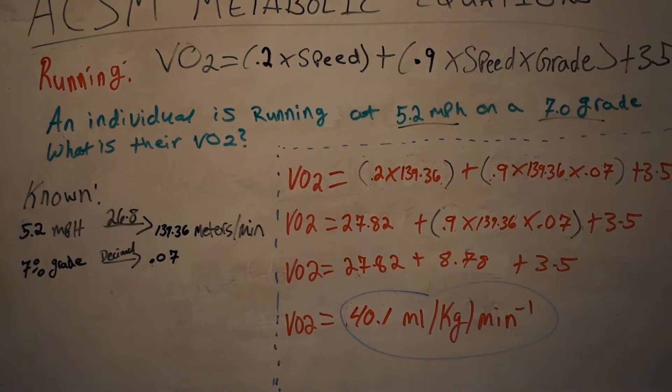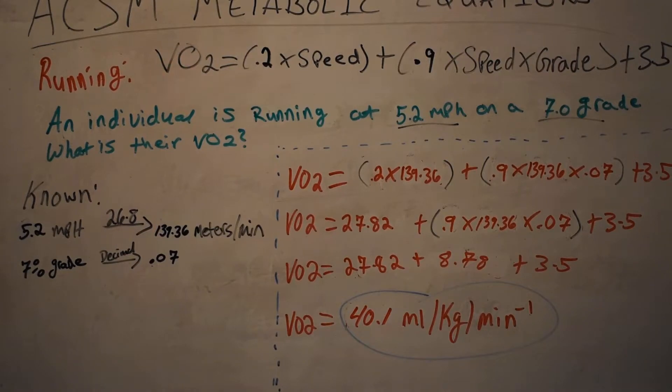In a previous video I covered the equation for walking, and that was hopefully a pretty good step-by-step process of how to calculate the VO2 or the functional capacity of an individual at a given speed and a given incline.